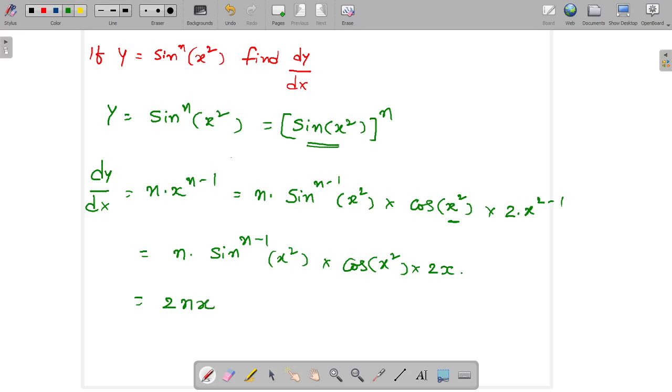2 into n into x, sin to the power n minus 1 of x squared, into cos of x squared.